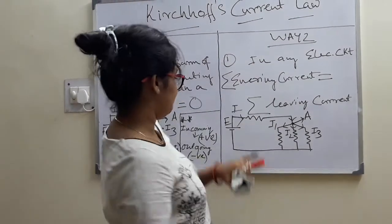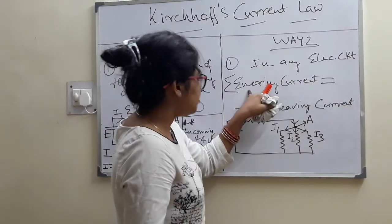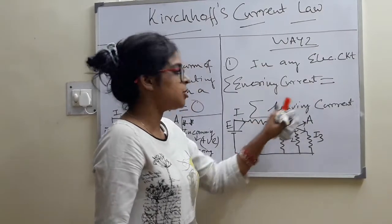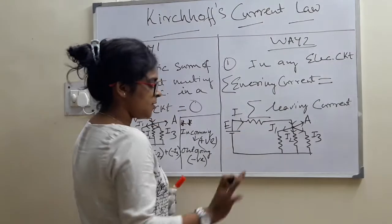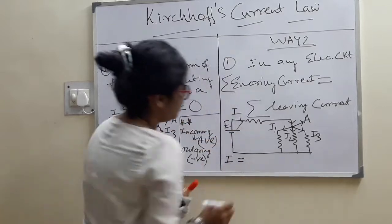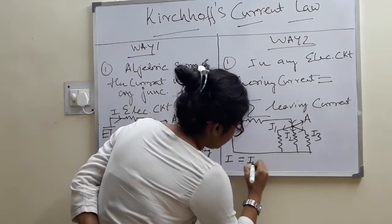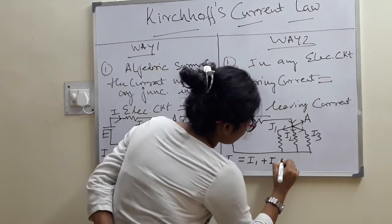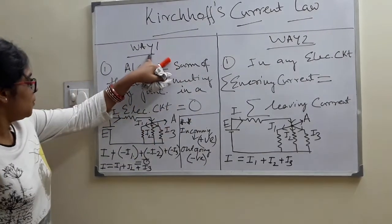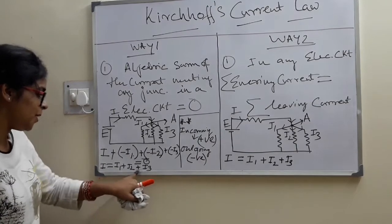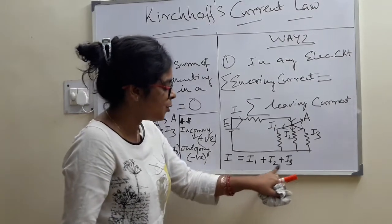Now, for Way 2 in this circuit: the summation of entering current equals the summation of leaving current. At junction A, the entering current is I and there is no other entering current. The three leaving currents are I1, I2, I3. So we write: I = I1 + I2 + I3. From Way 1 we got I = I1 + I2 + I3, and from Way 2 we also got I = I1 + I2 + I3. Both ways are correct for Kirchhoff's current law.